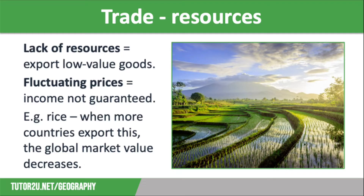A good example of this is rice, which is exported by several LICs in Southeast Asia. Rice grows in flooded paddy fields like the one you can see on the screen, so it is perfect for the monsoon climate of this region.